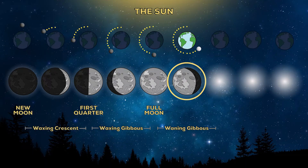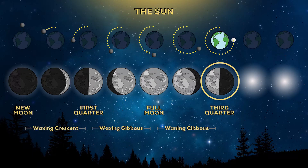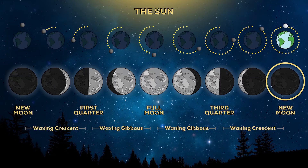As the Moon continues on its path, it appears to shrink again as we begin to see more and more of its dark side. Now we go through all of the phases again but in reverse order. A few days after the full Moon, we will see a waning gibbous. Waning means shrinking or getting smaller. The Moon will be waning for the rest of its orbit. The next phase looks like another half Moon, but it's called third quarter because the Moon is three quarters of the way through its orbit. Soon the half Moon appears to shrink into a waning crescent, which will continue to shrink night after night until it vanishes completely into the next New Moon.